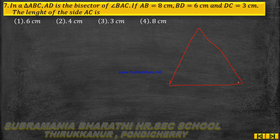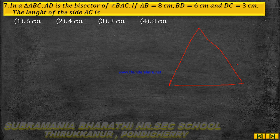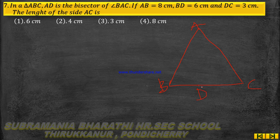This is triangle ABC with vertices A, B, C. AD is the internal bisector of angle A, and D is the point on BC.